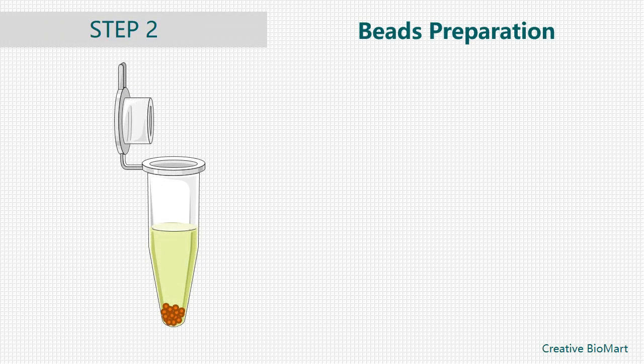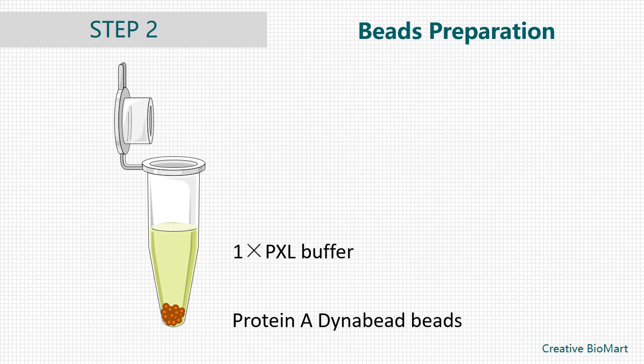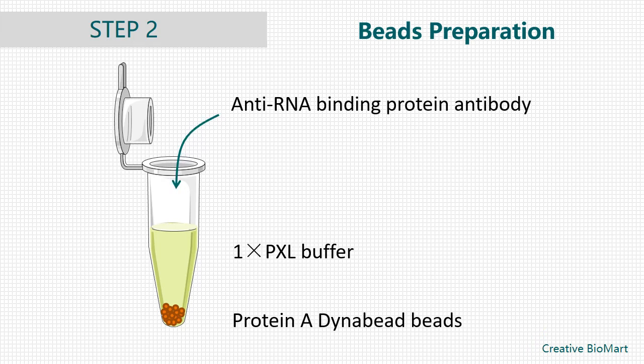Step 2, Beads Preparation. Pipet 100 µL of Protein G Dynabeads solution. Wash beads with 500 µL of PXL 2 more times. Resuspend beads in 100 µL of PXL and add an appropriate amount of your anti-RNA binding protein antibody. Rock the tube for 30 to 45 minutes at room temperature to bind the antibody to the beads. Wash the beads 3 times with PXL.